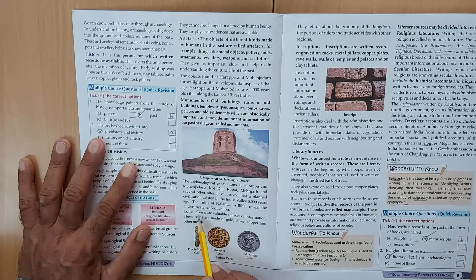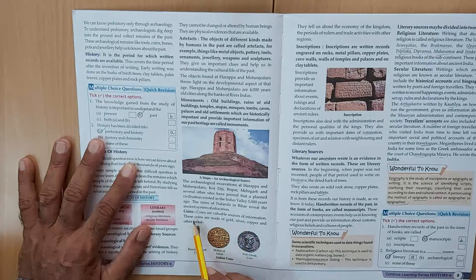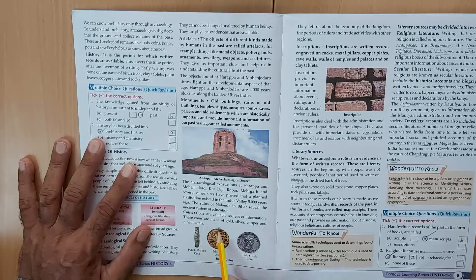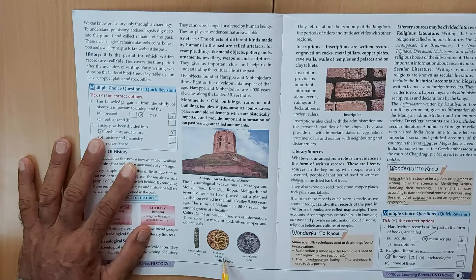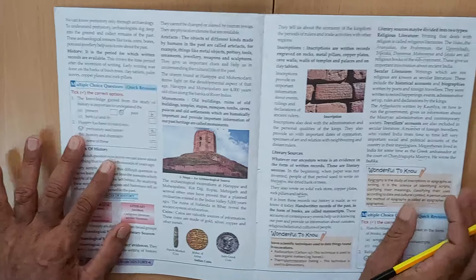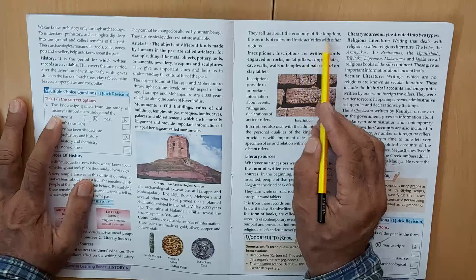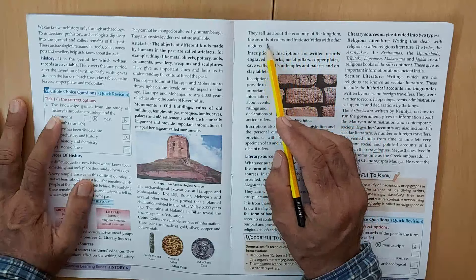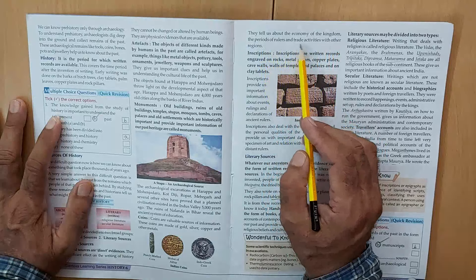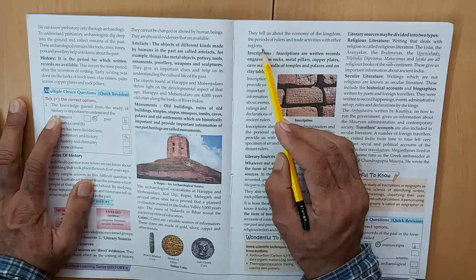Coins are valuable sources of information. These coins are made of gold, silver, copper and other metals. Examples include Indian coins, Punch Mark coins, Mohor of Akbar, and Indo-Greek coins. They tell us about the economy of the kingdom and the trade activities rulers had with other regions.